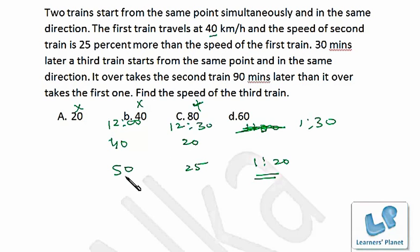So in this case, 50 and 60, the gaining speed is 10 km per hour. It has to gain 25 km, so that will take 2 and a half hours. So this train is starting at 12:30, so 12:30 plus 2 and a half, that's 3 o'clock.